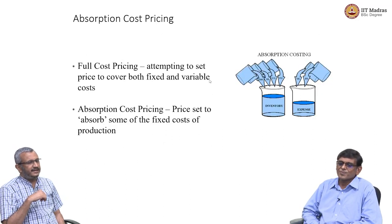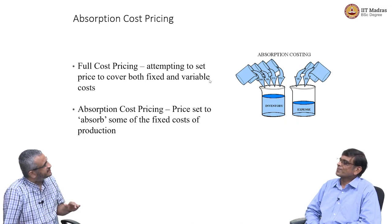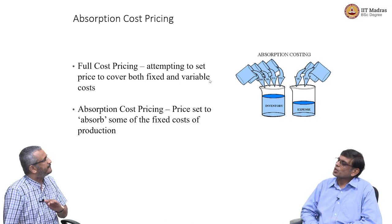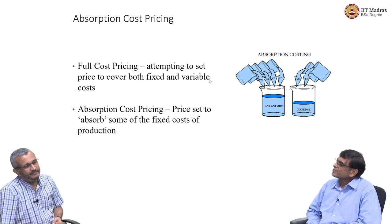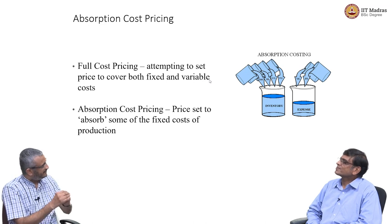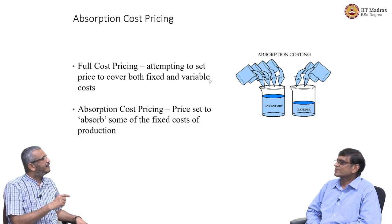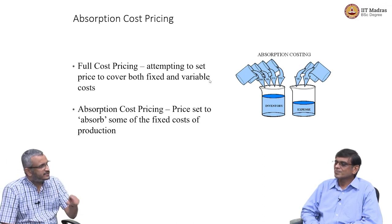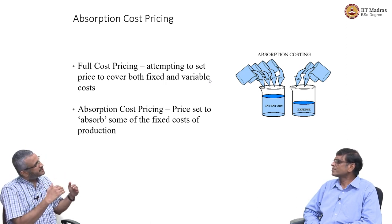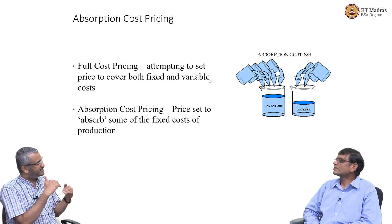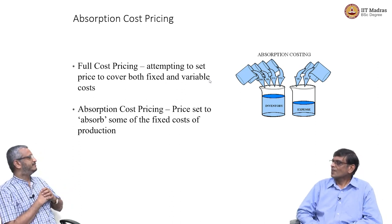Firms also pursue full cost pricing — covering average total cost, not just marginal cost. This is called absorption cost pricing: some or most fixed costs plus all variable costs are covered. When sunk costs are low and a large portion of fixed cost is not sunk, absorption cost pricing is feasible.